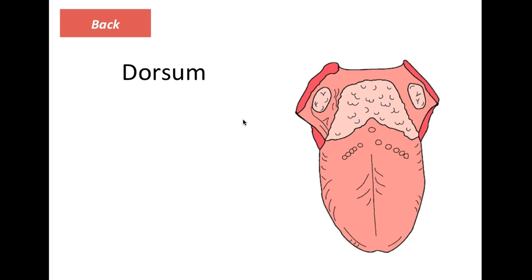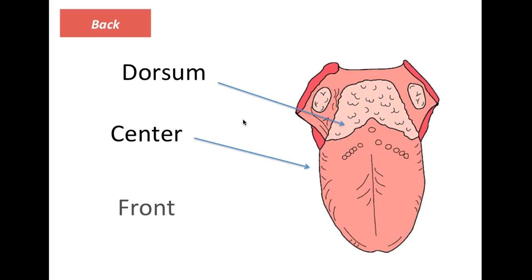The tongue is composed of the dorsum, the center, the front, and the apex. The apex is also referred to as the tip of the tongue. With the tip of the tongue we produce sounds such as 'T' — when the tip of the tongue touches the alveoli, which I'll show you shortly, we produce the T sound.